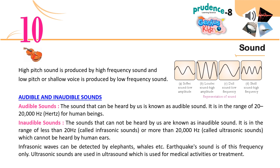The sound that can be heard by us is known as audible sound. It is in the range of 20 to 20,000 Hz for human beings. Inaudible sounds are those that cannot be heard by us. They are in the range of less than 20 Hz, called infrasonic sounds, or more than 20,000 Hz, called ultrasonic sounds, which cannot be heard by human ears.